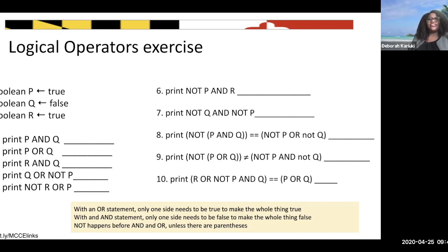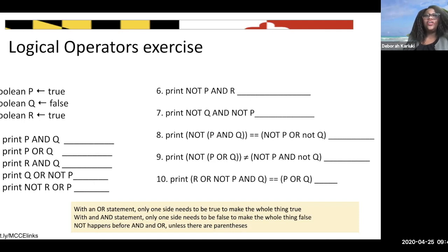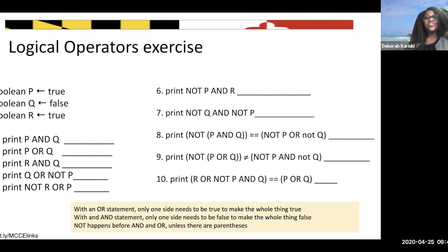Let's try numbers six and seven. Not P means P becomes false. So false AND R, which is true, becomes false. Very good. And number seven: NOT Q - Q was false, now it becomes true. So NOT Q is true, and NOT P is false. True AND false is false. Both of them evaluate to false.